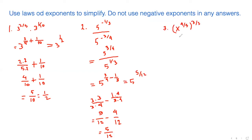Here the power x to the power 4 over 5 is raised to another power 3 over 2, so we multiply the two exponents. That gives x to the power 4 over 5 times 3 over 2. We can cancel 4 with 2 to get 2, so it becomes 2 times 3 over 5, giving x to the power 6 over 5.